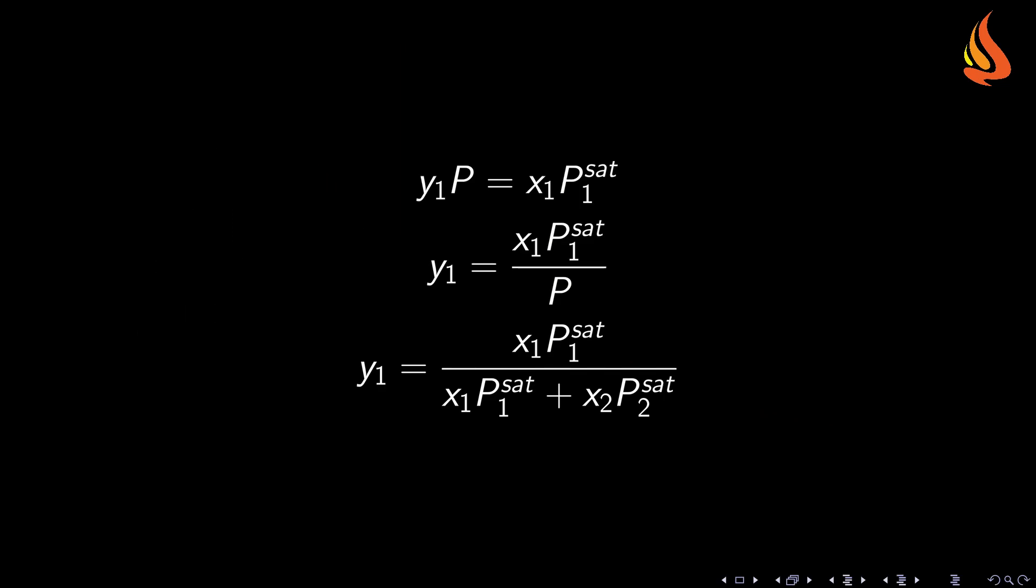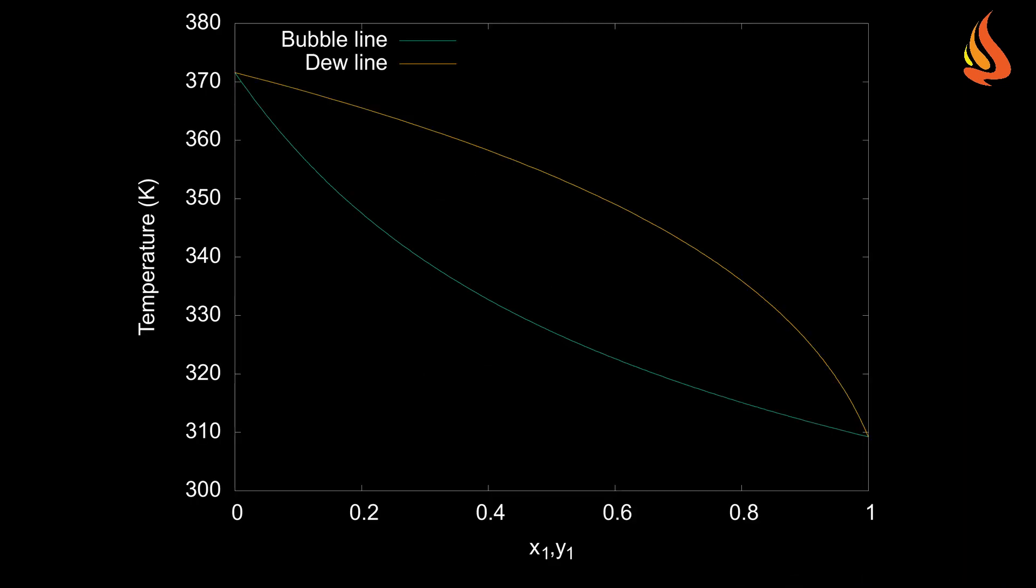We can extend this figure by plotting the mole fraction in the vapor phase against the temperature. To do that, we use the phase equilibrium condition for component 1, which is the first equation on this slide. After some manipulation, we find the last equation on this slide. Using it, we can calculate the mole fraction in the vapor phase as a function of the vapor pressures and of the mole fractions in the liquid phase. The yellow line represents these results, and it's called the dew point line.